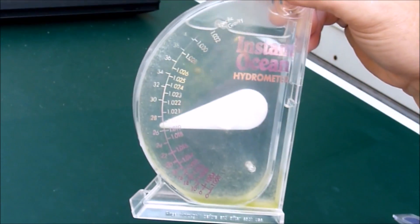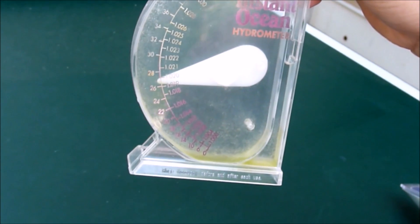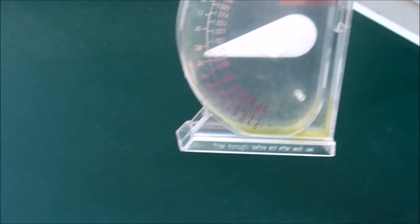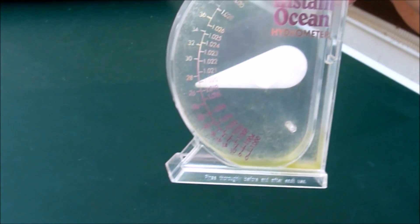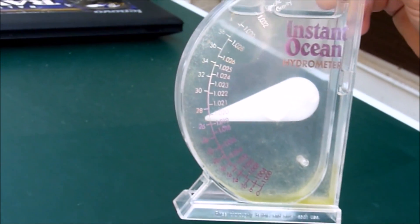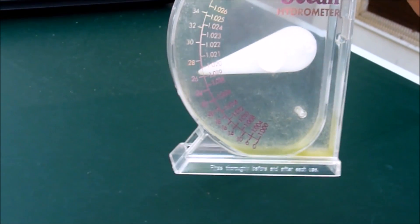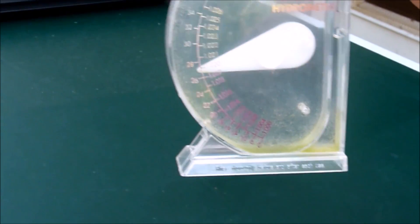So, not completely useless. It's good for quick checks. I can very quickly go in the aquarium, dip this in, and I should get a 1.020, which means 1.024. And there's that. So, that's your basic plastic, cheap hydrometer.